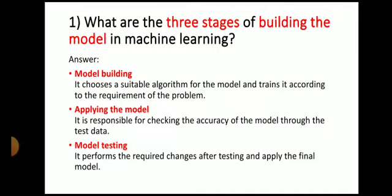The very first question: what are the three stages of building the model in machine learning? There are three stages: model building, applying the model, and model testing. In model building, it chooses a suitable algorithm and trains it according to the requirement of the problem. In applying the model, it checks the accuracy through test data. In model testing, it performs the required changes after testing and applies the final model.